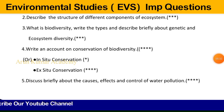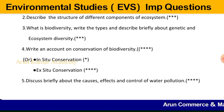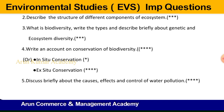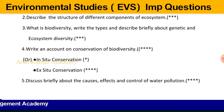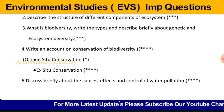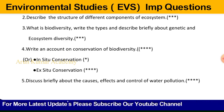Question number five: discuss briefly about the causes, effects, and control of water pollution. Here you need to write what water pollution is — contamination of water by pollutants like domestic sewage, infectious agents, pesticides, soil erosion, and so on. Write about sources and uses of water, how water is being polluted, and the direct and indirect sources of contamination. Then explain the causes, effects, and control measures of water pollution.